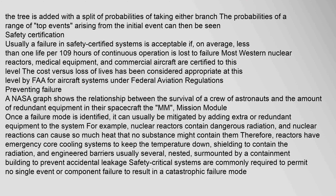Therefore, reactors have emergency core cooling systems to keep the temperature down, shielding to contain the radiation, and engineered barriers — usually several nested — surmounted by a containment building to prevent accidental leakage. Safety-critical systems are commonly required to permit no single event or component failure to result in a catastrophic failure mode.